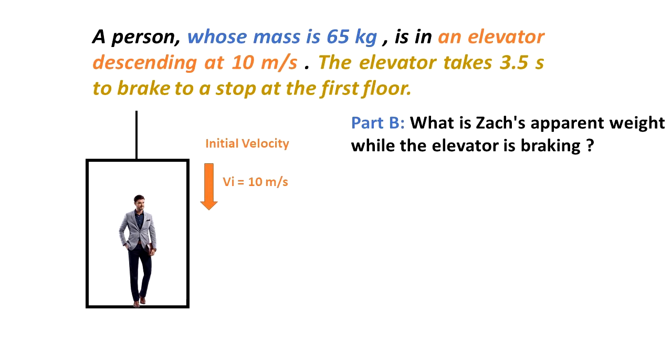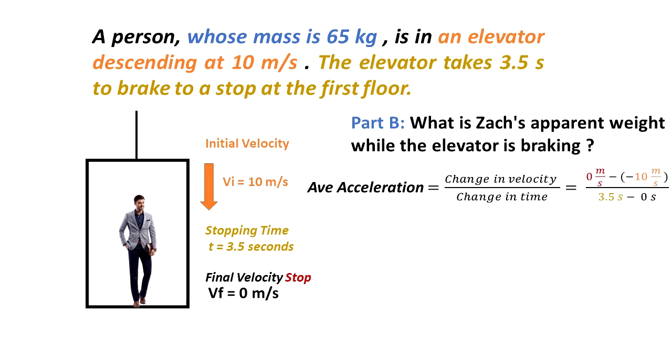In this case, before braking the velocity was constant, but in the moment when braking starts, velocity is not constant anymore. That's why 10 meters per second is our initial velocity. Final velocity is going to be zero meters per second because the elevator is going to get to a complete stop. The time that it takes the elevator to stop is 3.5 seconds.